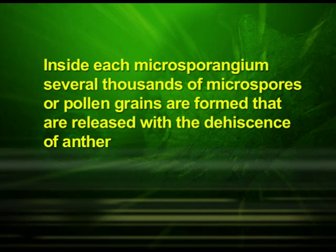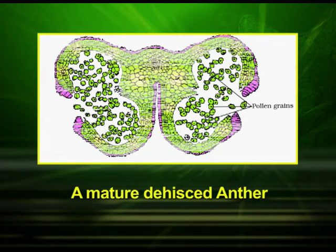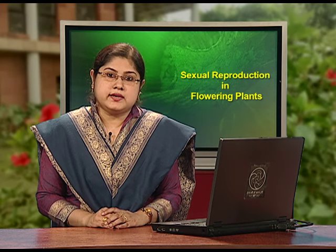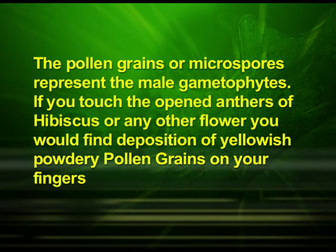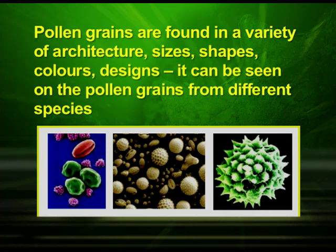Inside each microsporangium, several thousands of microspores or pollen grains are formed and are released with the dehiscence of the anther. Here in this diagram you can see a matured dehiscent anther with mature pollen grains coming out of its openings. Pollen grains or microspores represent the male gametophytes. If you touch the open anthers of hibiscus or any other flower, you would find deposition of yellowish powdery pollen grains on your fingers. Pollen grains are found in a variety of architecture, sizes, shapes, colors and designs, which can be observed under a microscope.